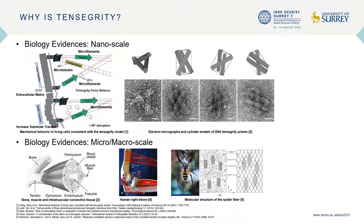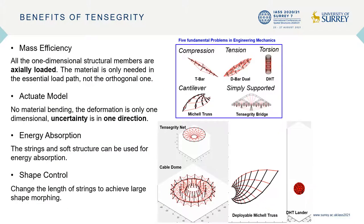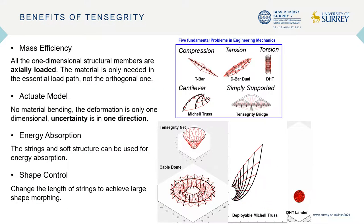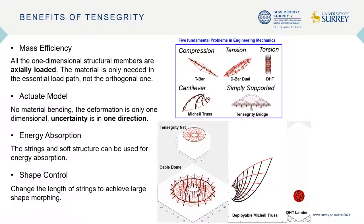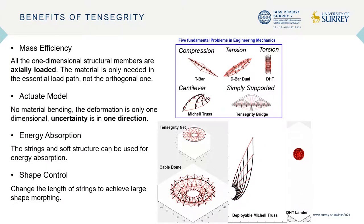Biology perhaps provides the greatest evidence that tensegrity structure is the most efficient structure. For example, from nanoscale to macroscale, the surface control of the cell, the DNA bundles, the elbows, and spider fibers — they are all consistent with tensegrity models. After decades of study, tensegrity has shown its many benefits in mass efficiency, accurate memory modeling, energy absorption, and shape control.